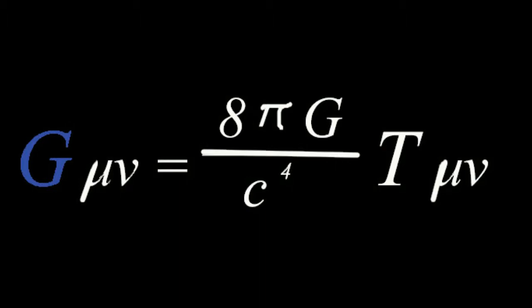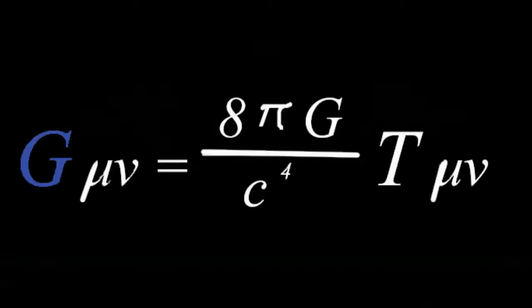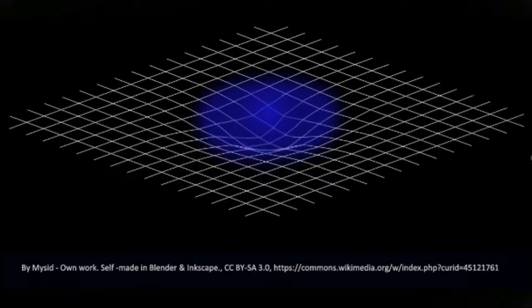The G on the left represents the shape of space-time, but Einstein combines the G with symbols between the G and the equal sign that represent the gravitational field. Back to the train, or the world, coming to rest.